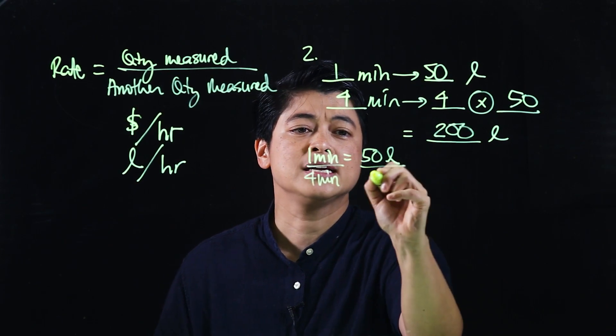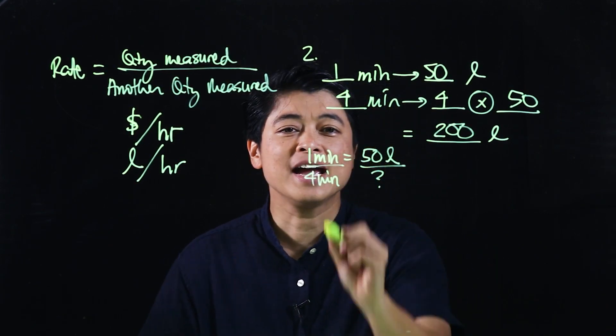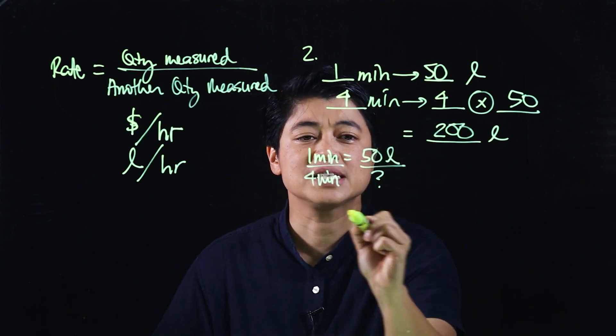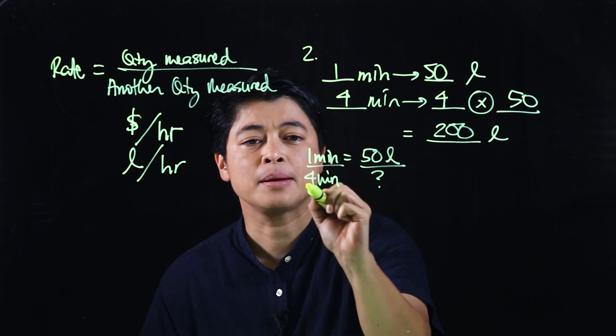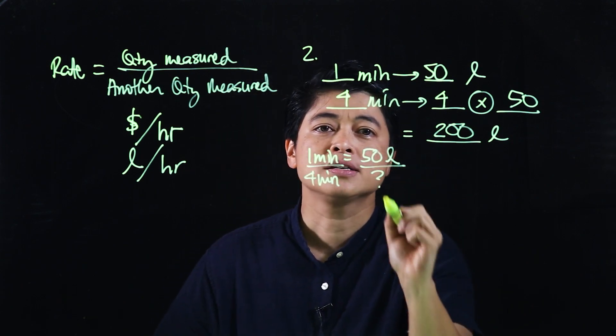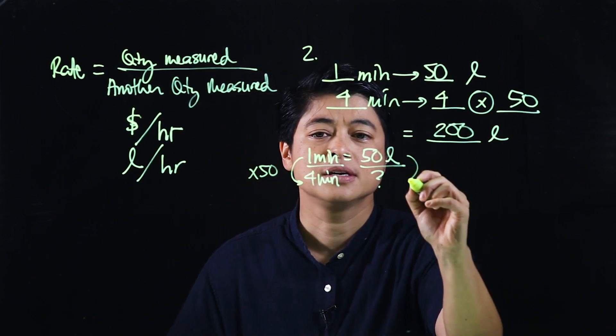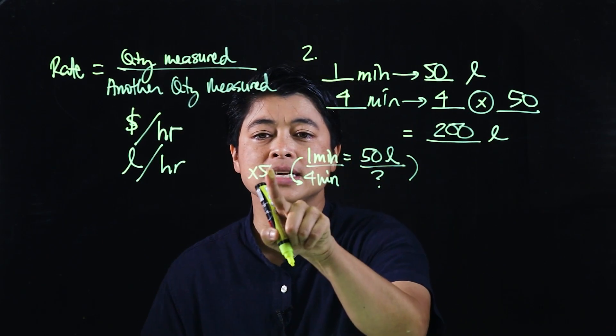My approach would have been one minute is equal to 50 liters, so which means four minutes is what? So here I can do two things: I can go times 50, which means times 50, but I can go times four and times four.